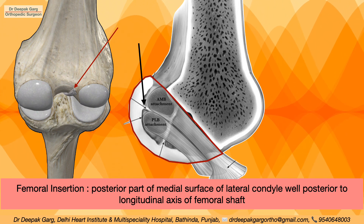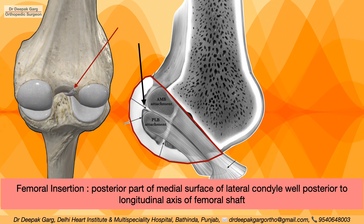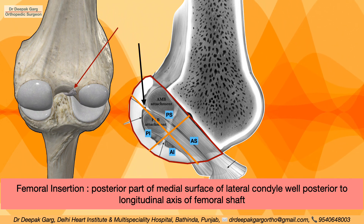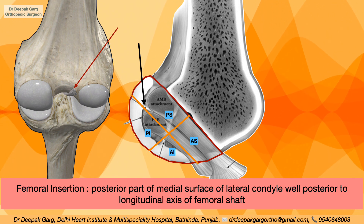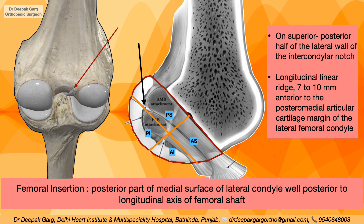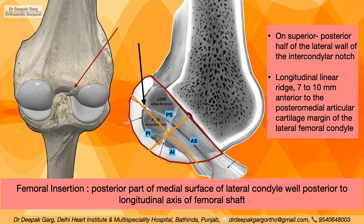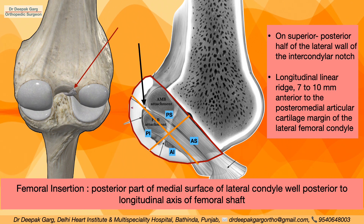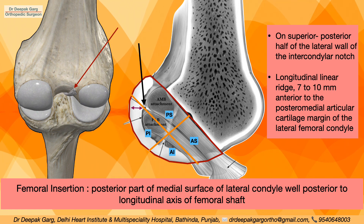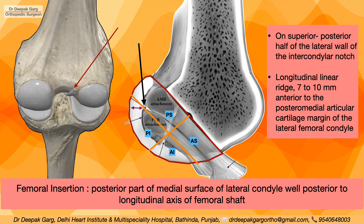Looking at this area — the medial surface of the lateral femoral condyle — if we divide it into four equal parts: posterosuperior, anterosuperior, posteroinferior, anteroinferior, the resident's ridge lies in the posterosuperior area, on the posterior and superior half of the lateral wall of the intercondylar notch, roughly 7 to 10 mm anterior to the posteromedial articular cartilage margin. Identifying the resident's ridge is crucial, as it helps us make the femoral tunnel later.